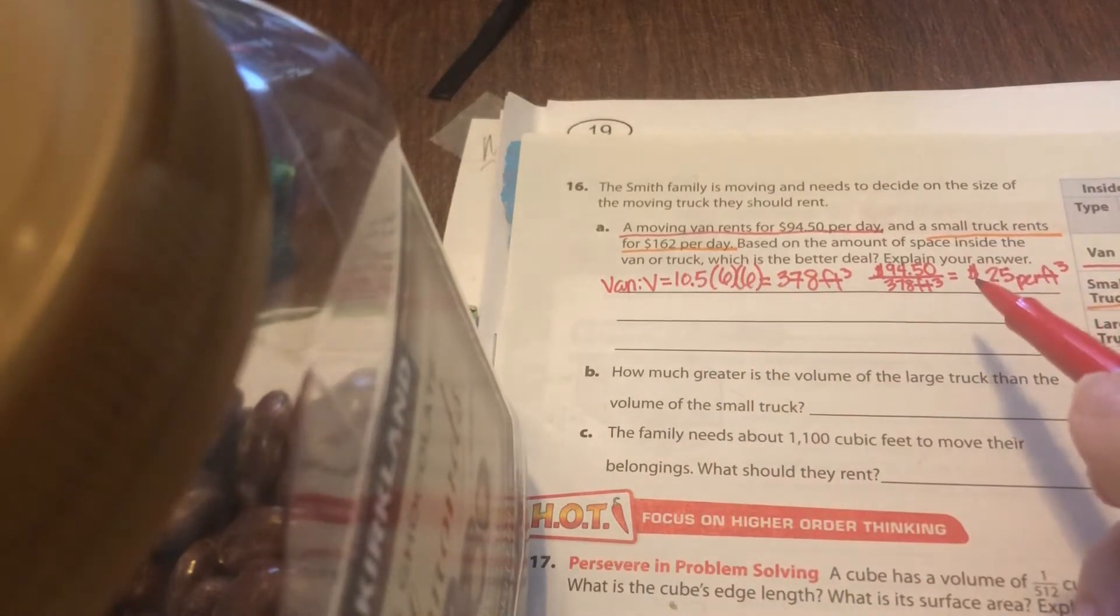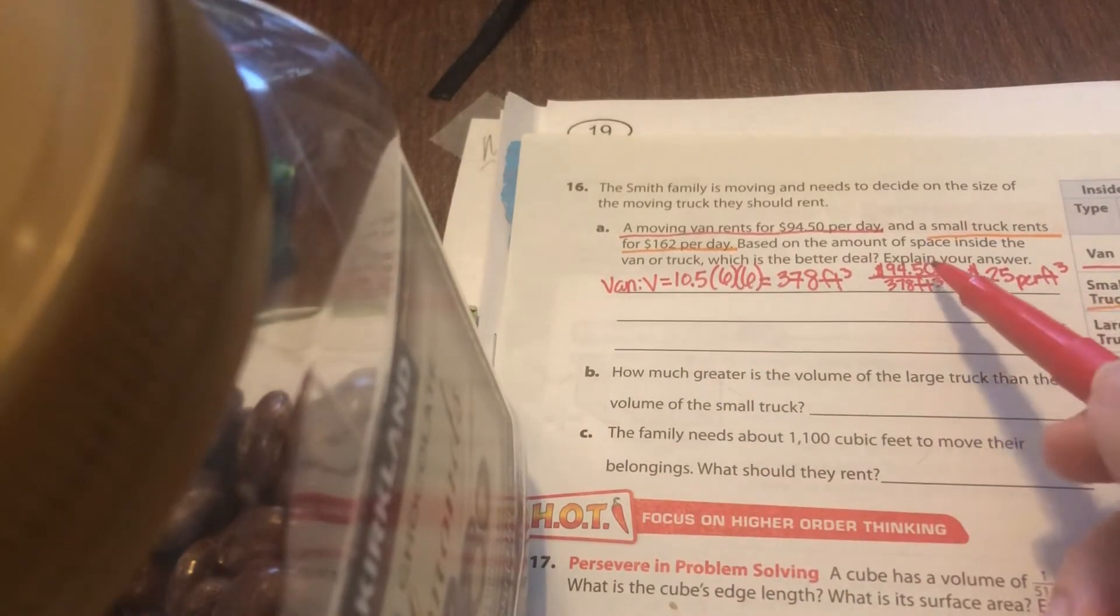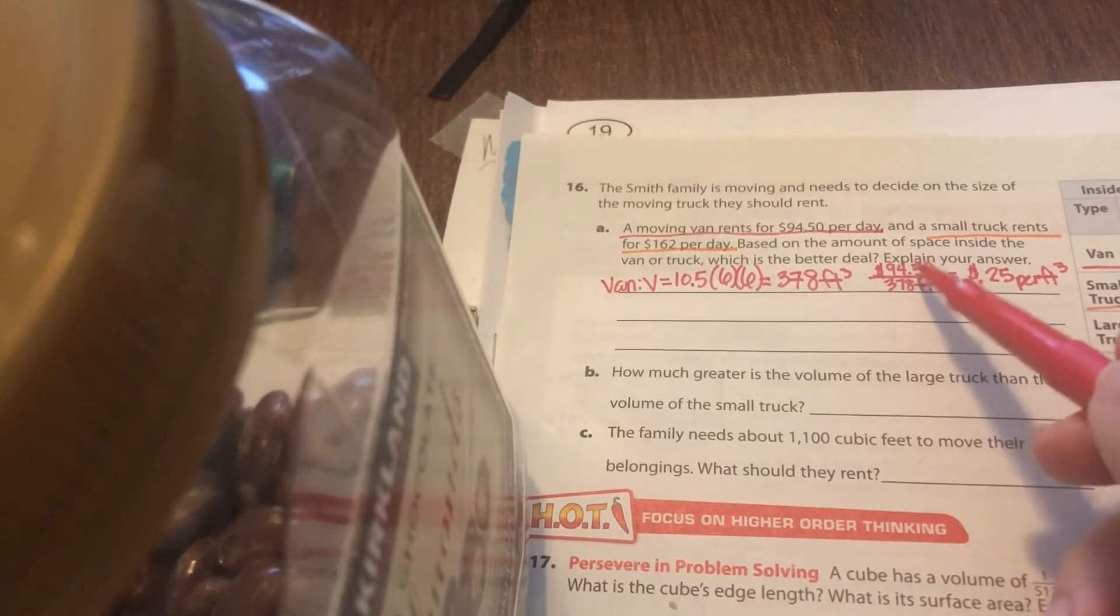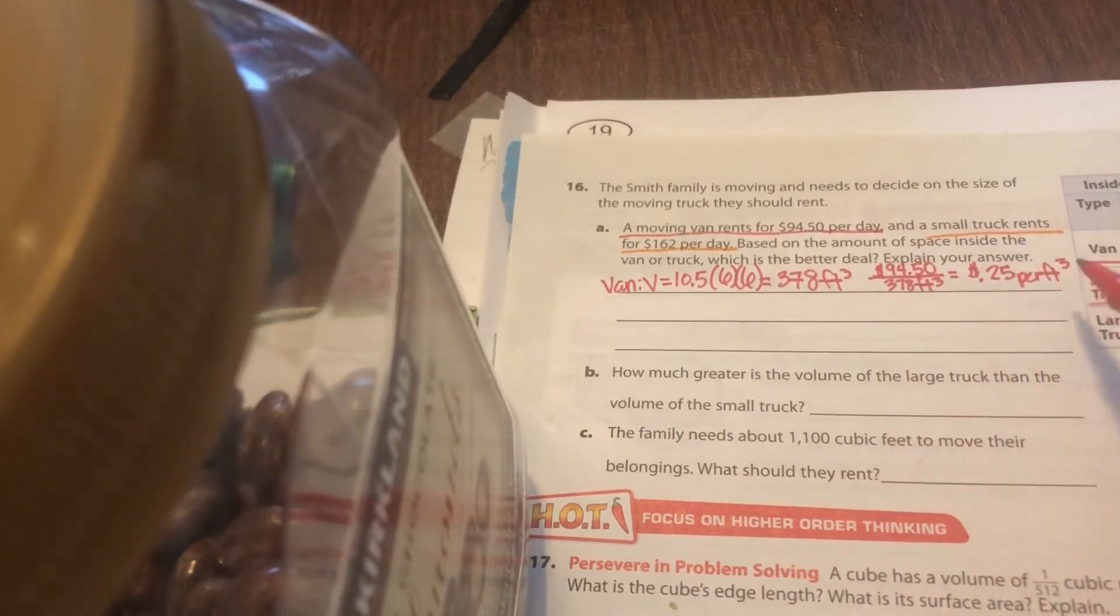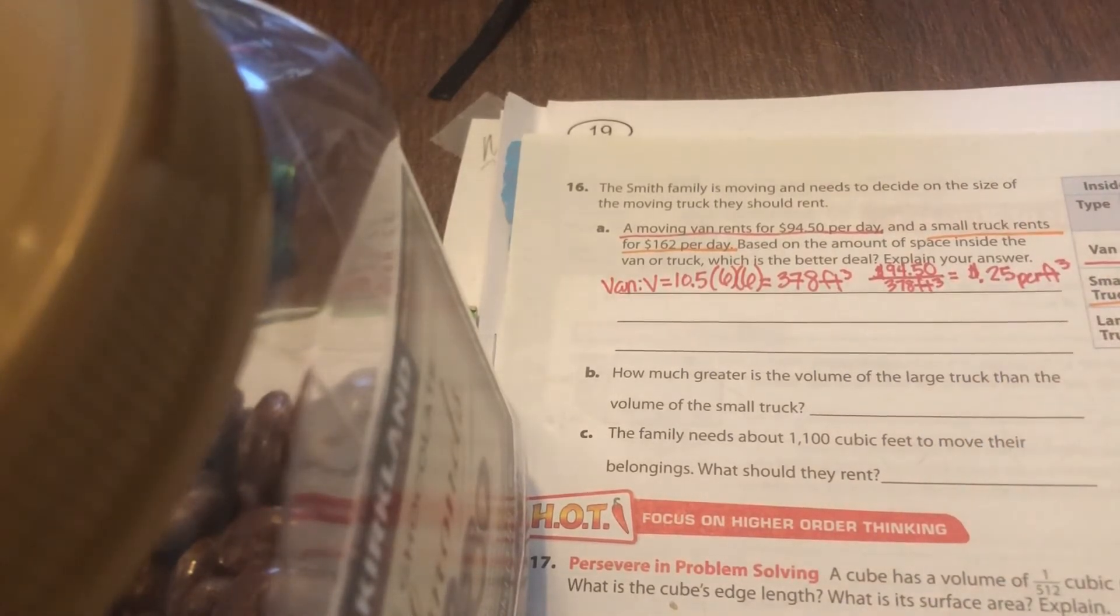That's the volume of the van. But I want to know how much is it per one cubic foot. So find the unit rate. Take how much it costs for the whole, just to rent it for the whole day, and then how big it is. And that will tell you how much it is per cubic foot for the van.